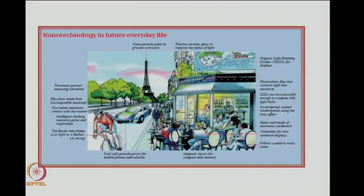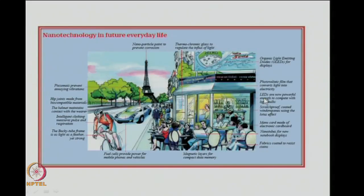We can see nanotechnology applications in future everyday life. For example, there will be thermochromic glass coated with nanomaterials to regulate and cut down certain wavelengths of light going through a window. Similarly, you will have organic light-emitting diodes for displays, photovoltaic films that convert light into electricity, and LEDs for efficient low-cost light bulbs based on new nanomaterials. There will also be glass coatings that are scratch-proof and have hydrophobic surfaces.